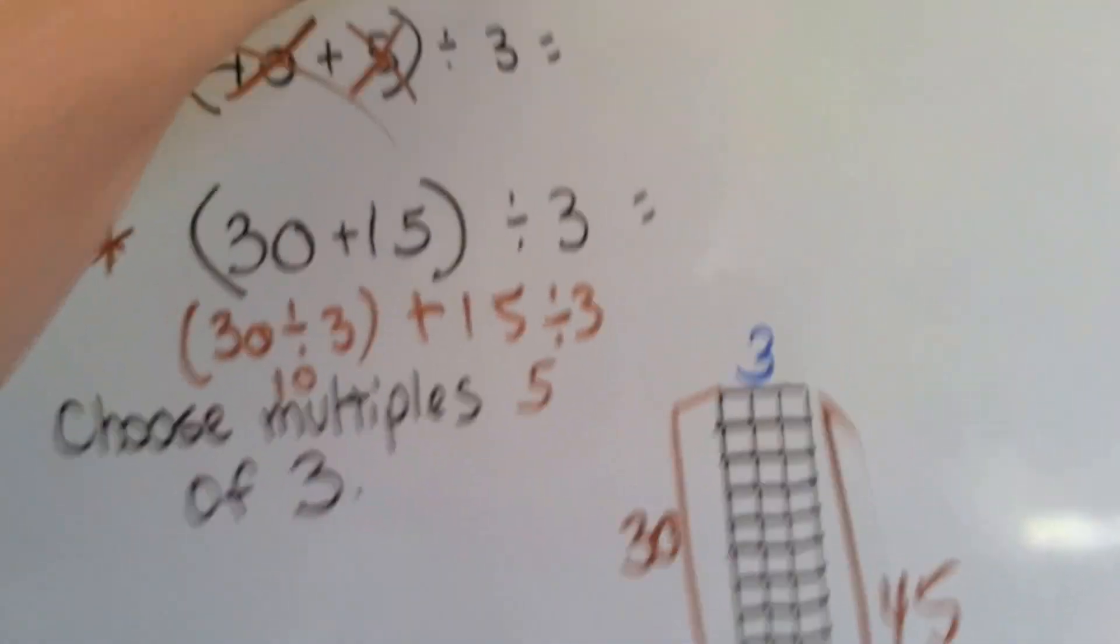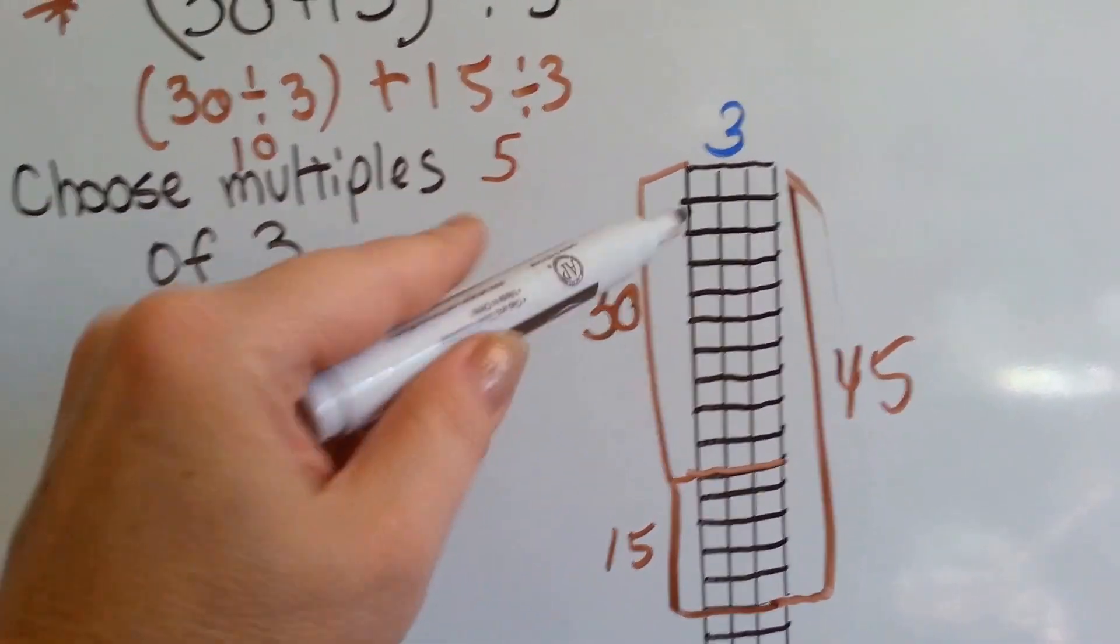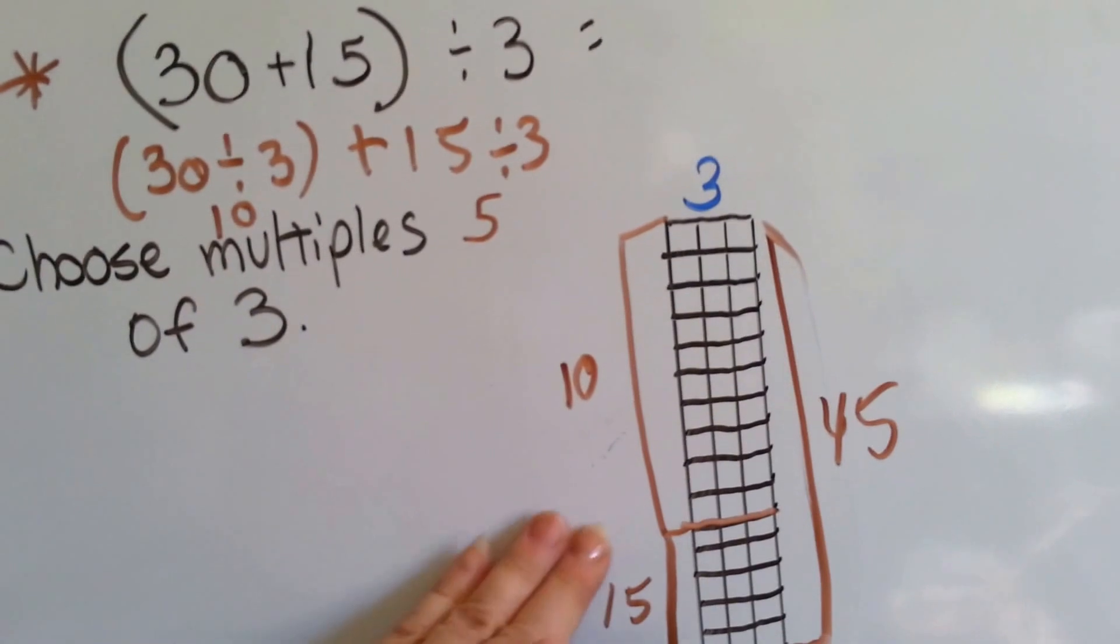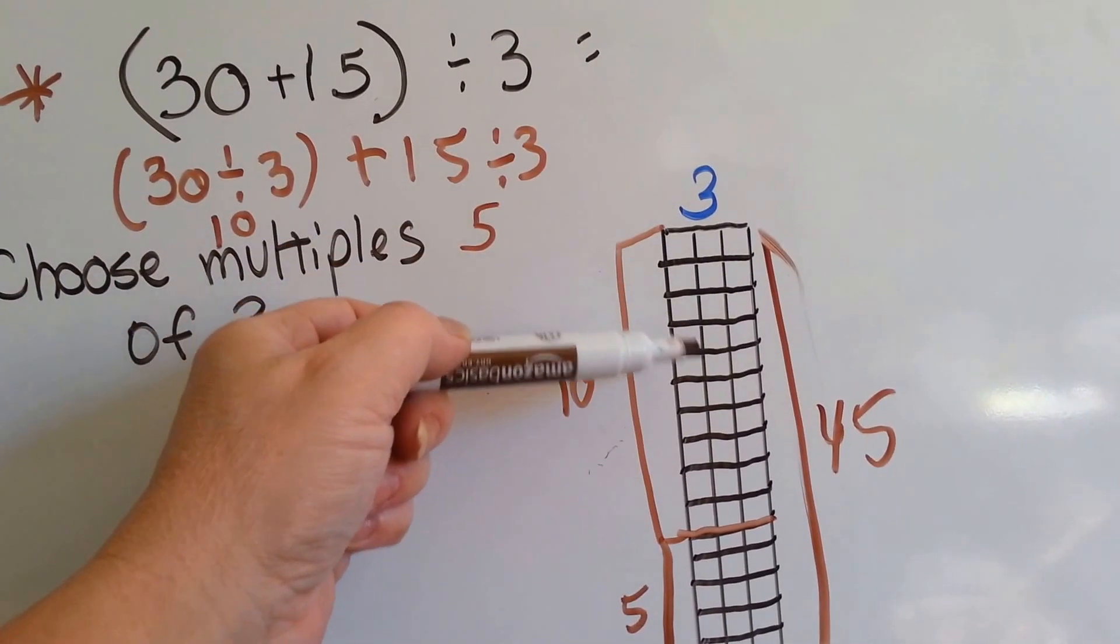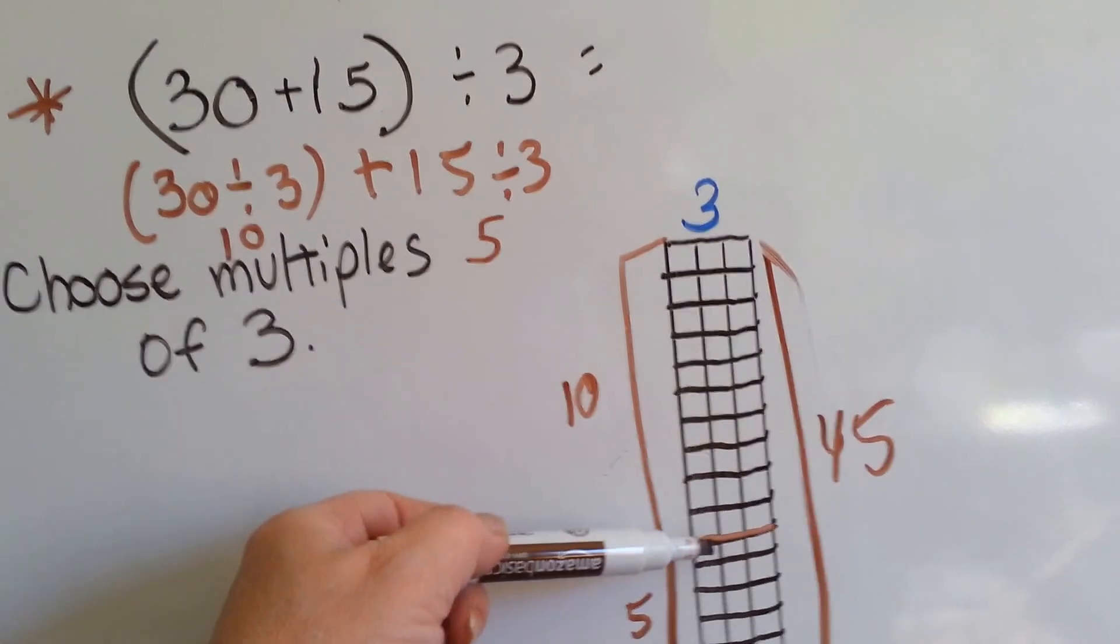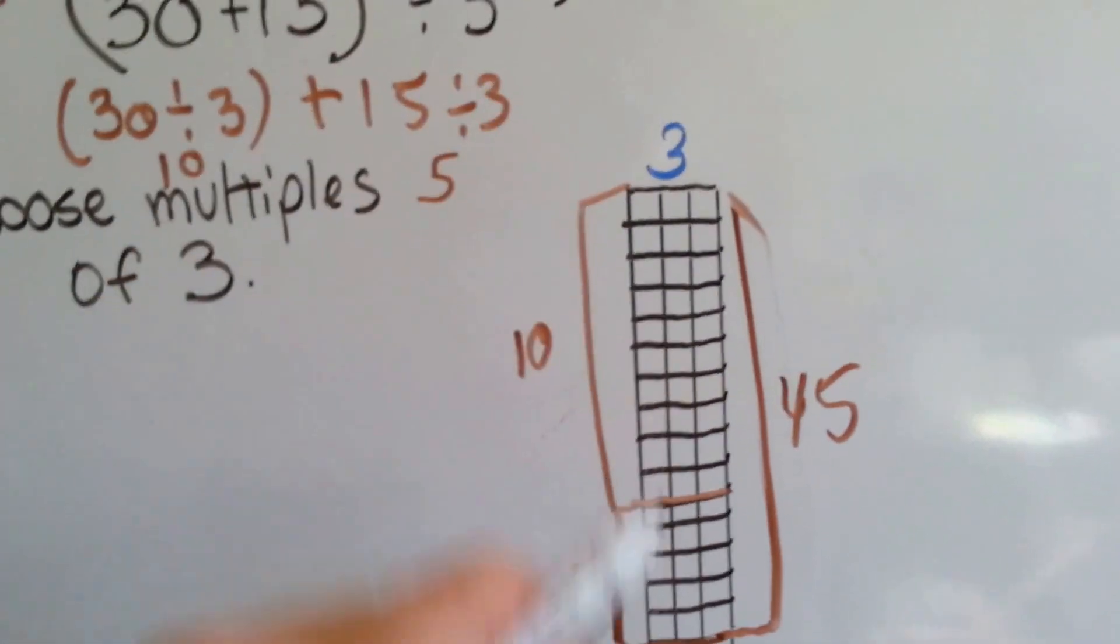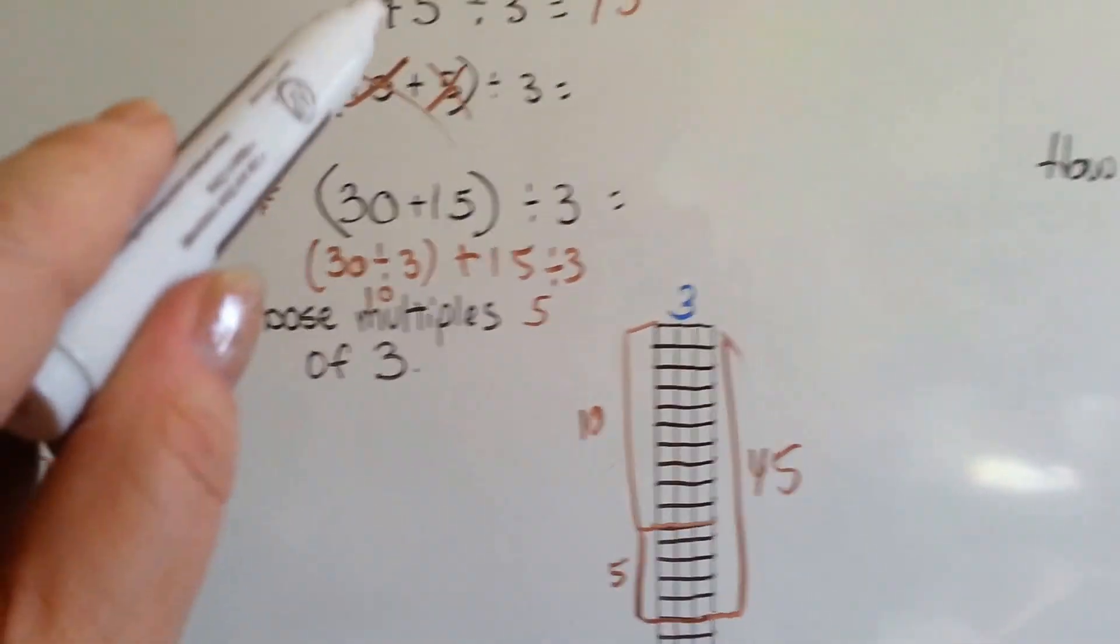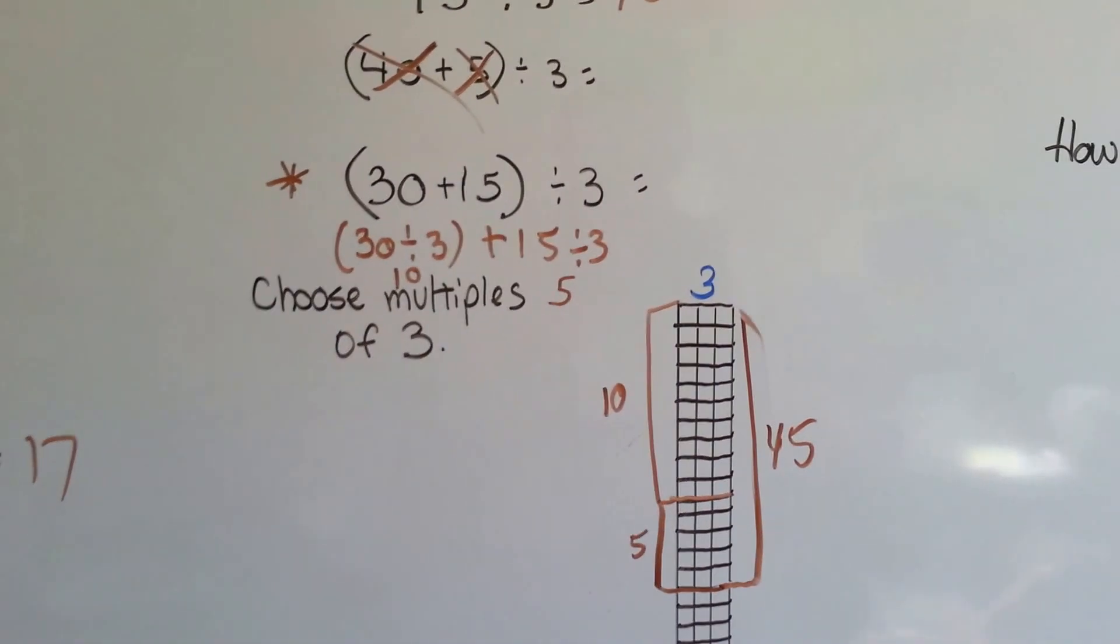So 45 divided by 3 is 15, because we went down 10 columns here and 5 here: 1, 2, 3, 4, 5, 6, 7, 8, 9, 10 times 3 is 30, and then 5 times 3 is this 15. So 45 divided by 3 is 15. This 10 plus this 5.